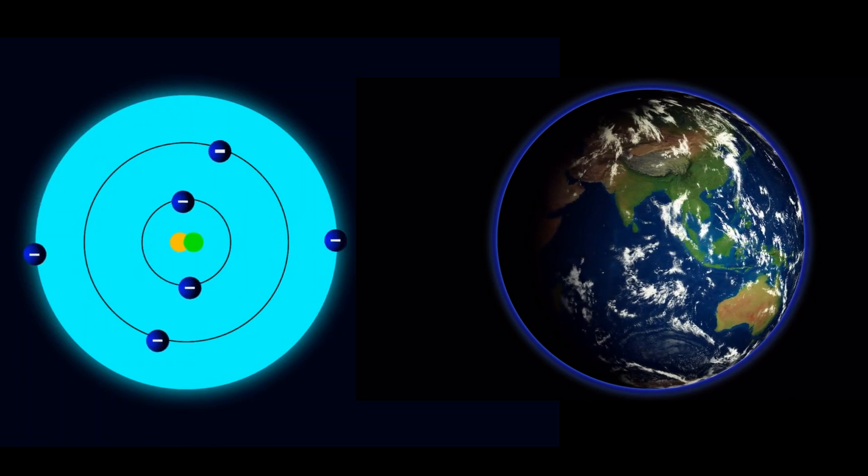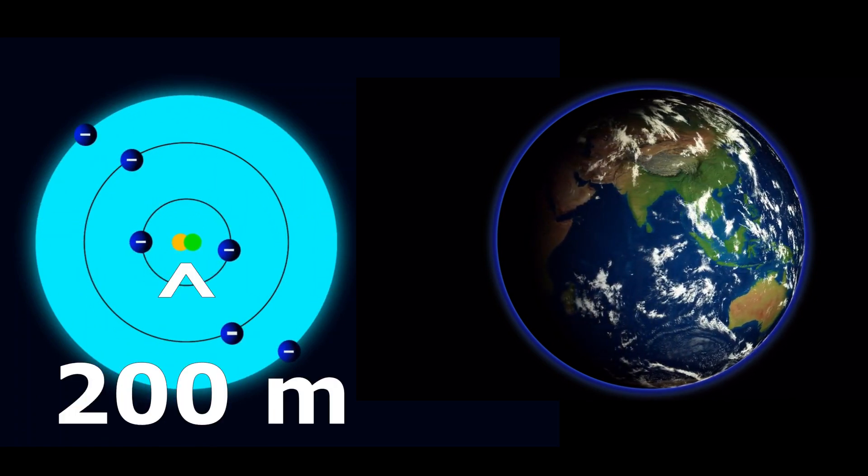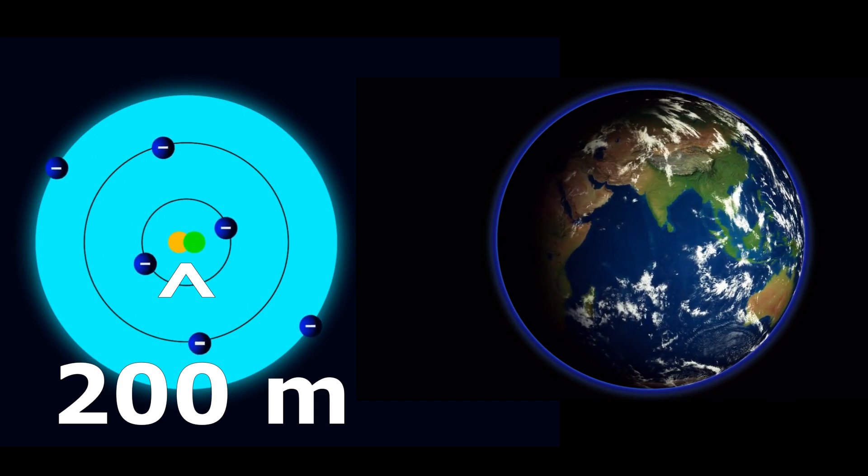Let me make it easier for you to imagine. If an atom were the size of the Earth, the nucleus would be just about 200 meters across.